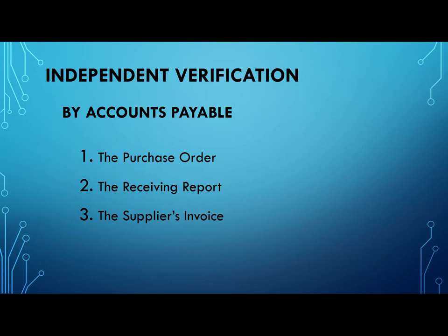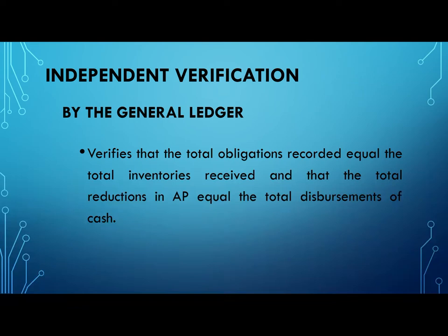Independent verification by the general ledger verifies that the total obligations recorded equal the total inventories received, and that the total reductions in accounts payable equal the total disbursements of cash.